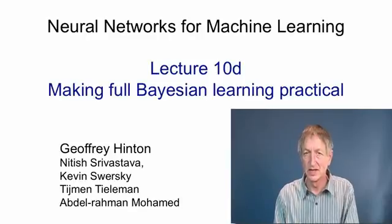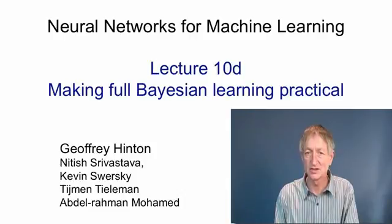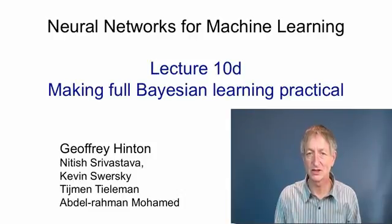In this video, I'm going to describe how to make full Bayesian learning practical for neural networks that have thousands and perhaps even millions of weights. The technique used is a Monte Carlo method, which seems very odd the first time we hear about it. We use a random number generator to move around the space of weight vectors in a random way, but with a bias towards going downhill in our cost function.